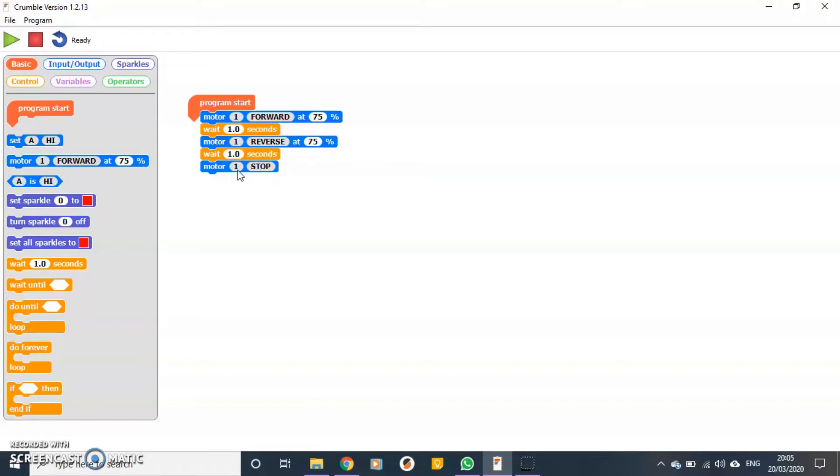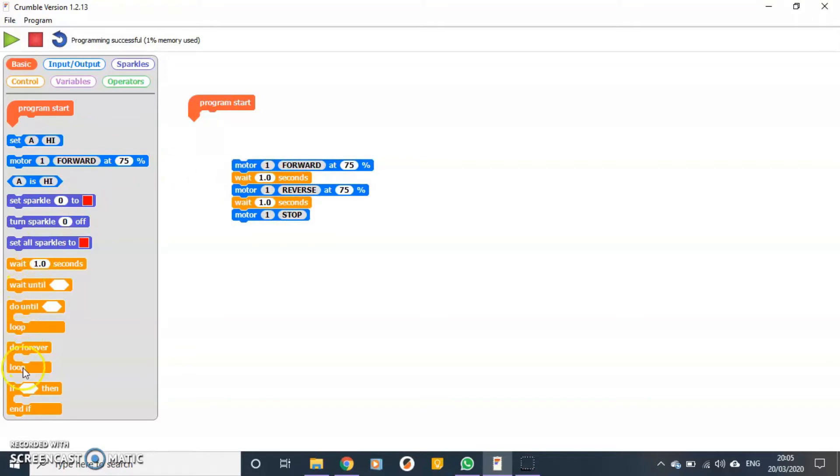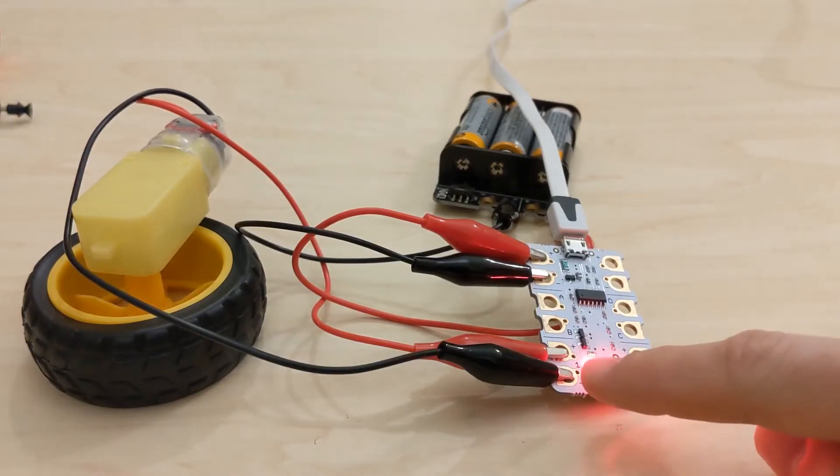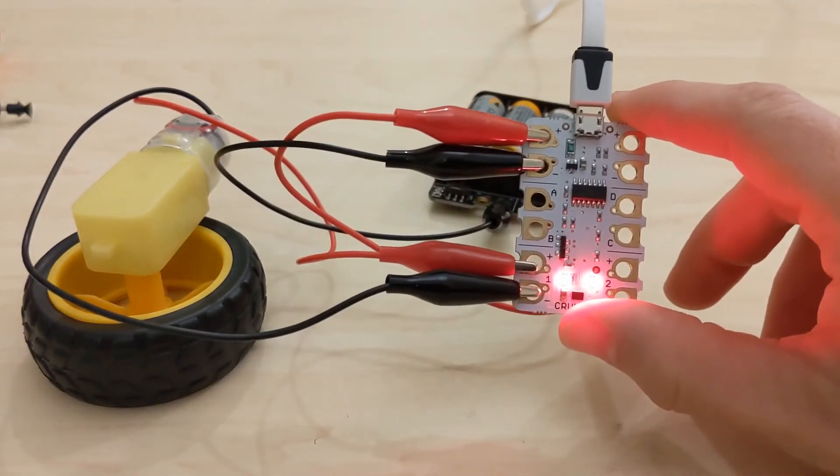So we'll do a simple program. Let's start off with the start block. We'll make the motor go forward at 75%, put a wait in there for a second, then put a motor one block in again. This time we'll make it reverse for a second, and then put a block in which is going to make it stop. So it should go forward for a second, reverse for a second, and then stop. We'll quickly double check by looking at the crumble board. Yep, we are using motor number one. That's really important.